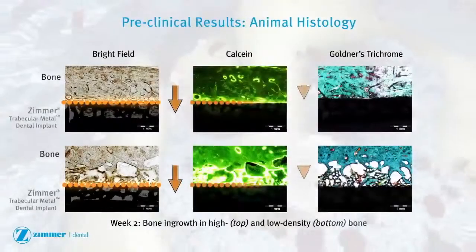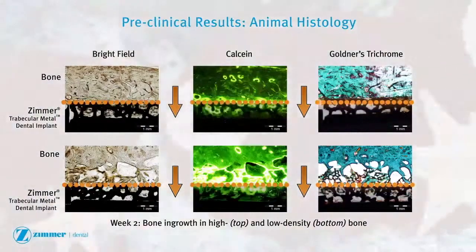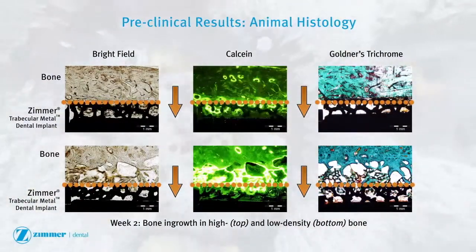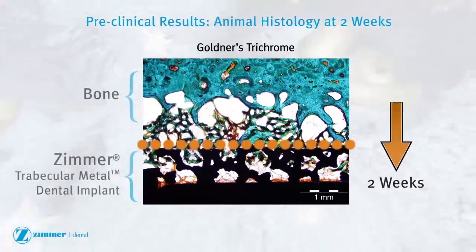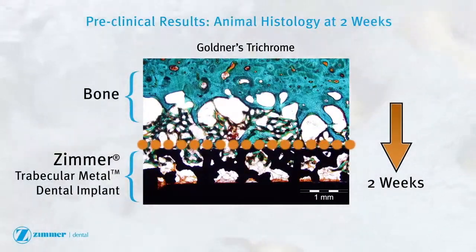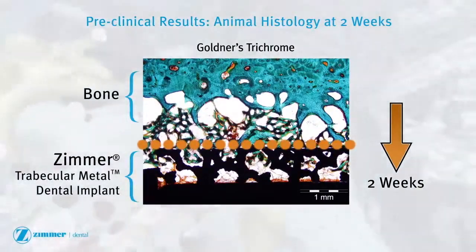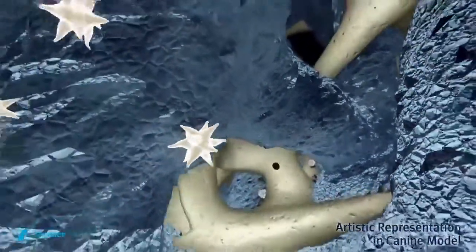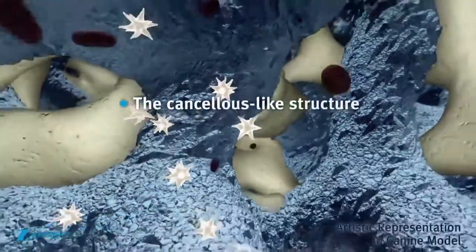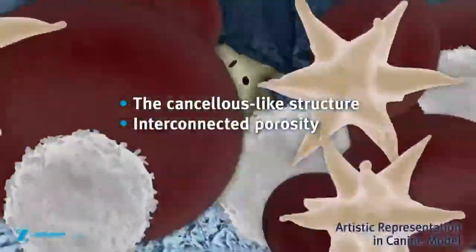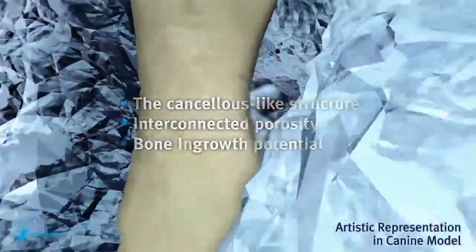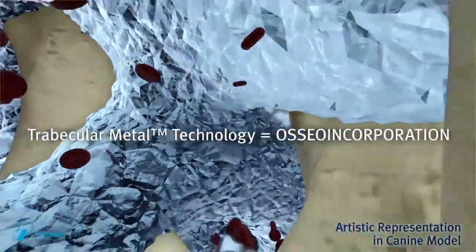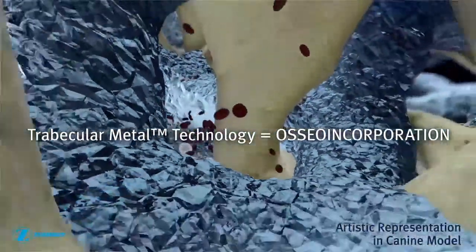In a study of trabecular metal implants placed in canine mandibular models, evidence of in-growth by maturing bone has been documented as early as two weeks after implantation. Further research is required to determine the rate of in-growth and its effects on secondary stability in human dental applications. The cancellous-like structure, interconnected porosity, and in-growth potential are a unique combination of attributes that contribute to the osseoconductive properties of trabecular metal technology.